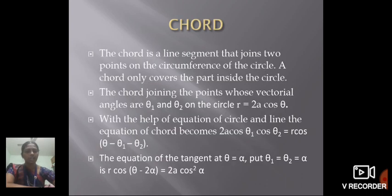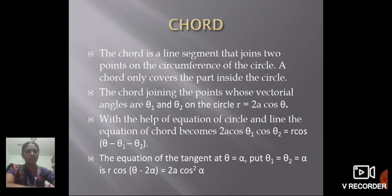Next is the chord. Generally, a chord is a line segment that joins two points on the circumference of the circle. A chord only covers the part inside the circle and is not equal to the diameter. The chord joining points with vectorial angles theta1 and theta2 on the circle R equal to 2A cos theta gives: 2A cos theta1 cos theta2 equal to R cos(theta minus theta1 minus theta2). For the equation of the tangent, we set theta1 equal to theta2 equal to alpha, giving R cos(theta minus 2 alpha) equal to 2A cos square alpha.